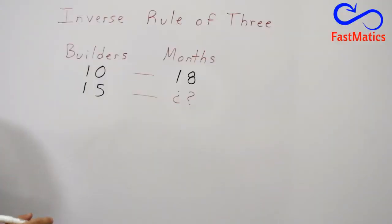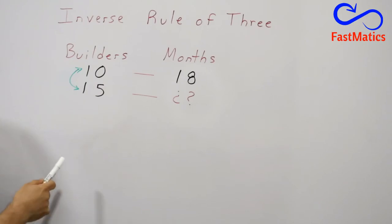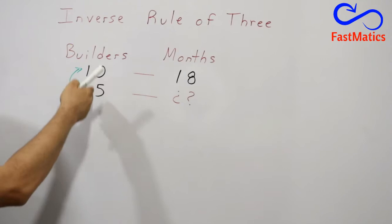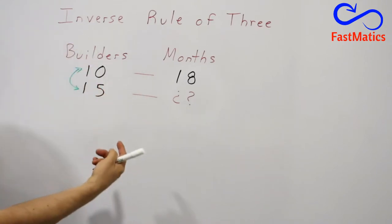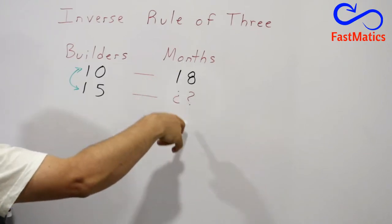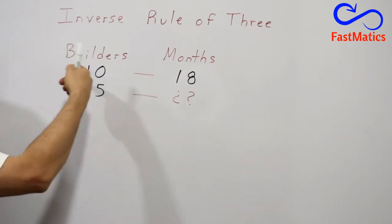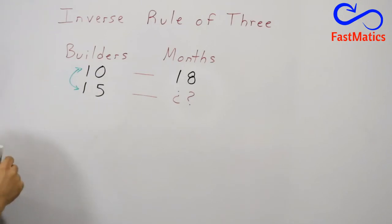So to solve it, you have to flip those two numbers in the column where you have two numbers. In the column you have the two numbers, you are going to flip them and you are rewriting the rule of 3. And now we are going to solve it as a direct rule of 3.